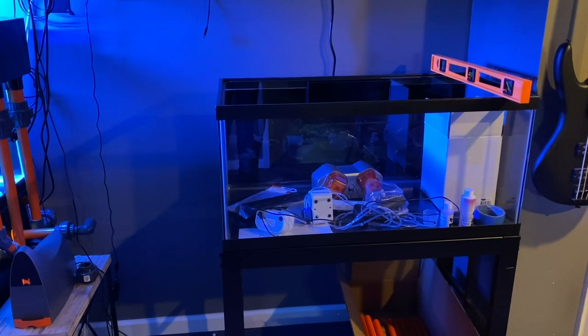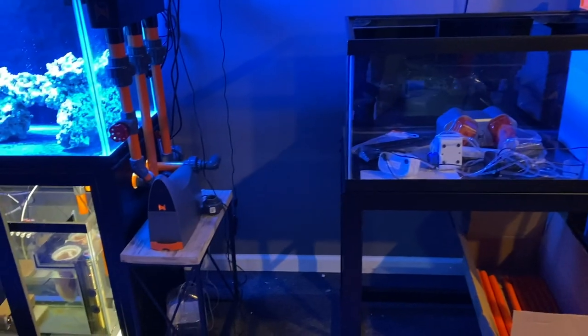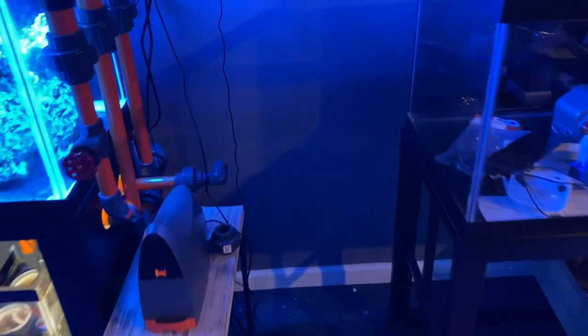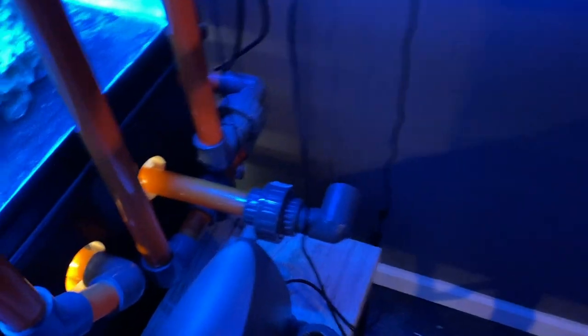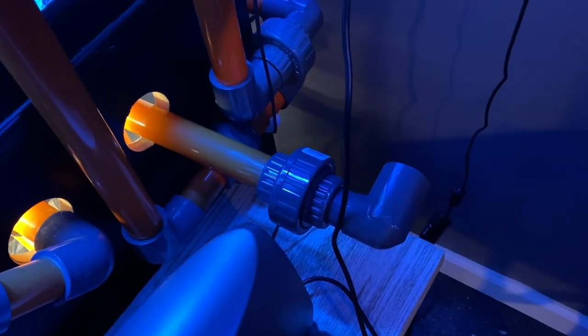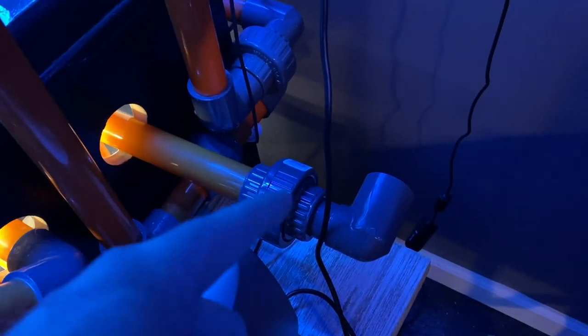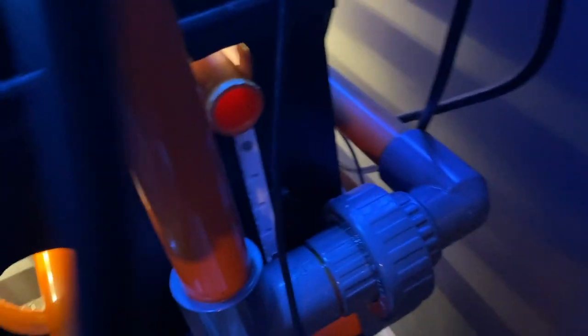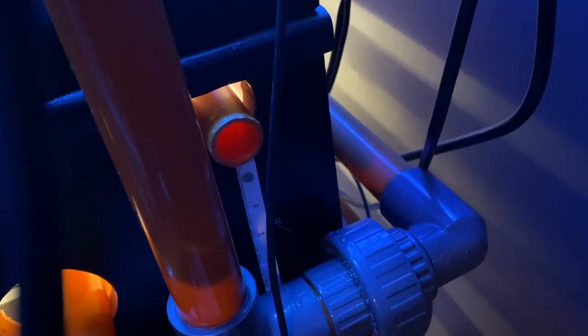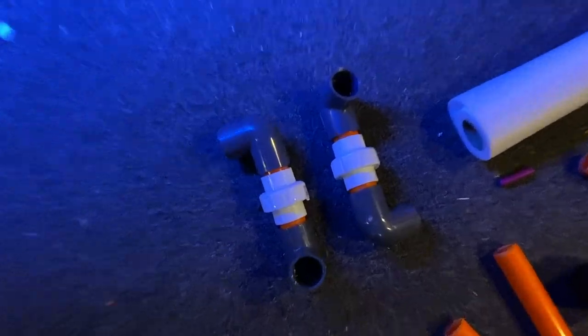So to get this project started, I have to connect the 40 breeder to the pre-existing plumbing of the 135-gallon, starting with the main drain line you can see right here. Then I have to connect the return line, which comes out of the stand right here. So to get started, I made these.